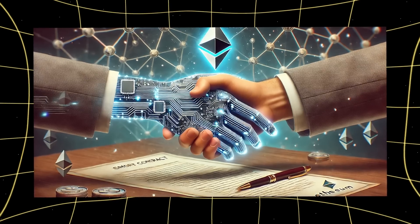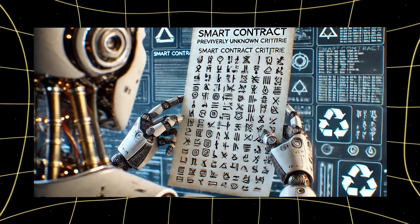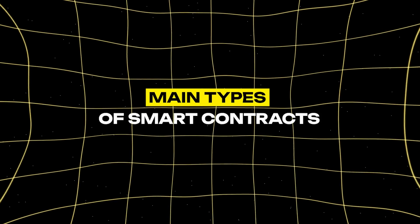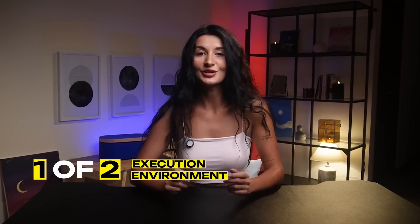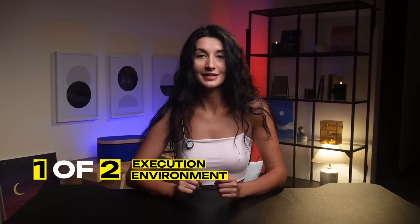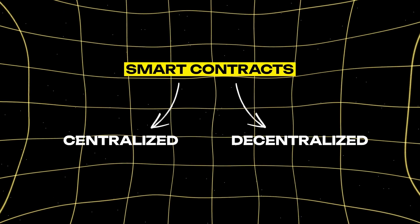Smart contracts can be classified based on several important criteria that define their characteristics and application areas. Let's take a look at the main types of smart contracts. The first classification criterion is the execution environment, according to which smart contracts are divided into centralized and decentralized.